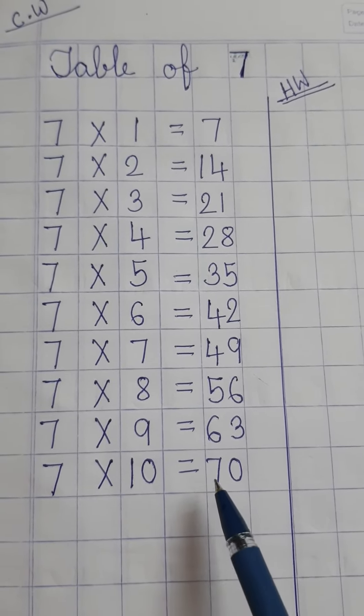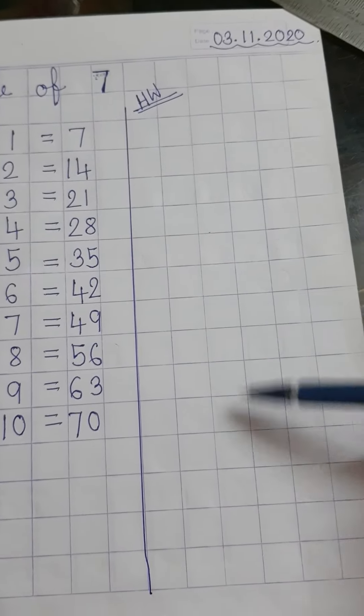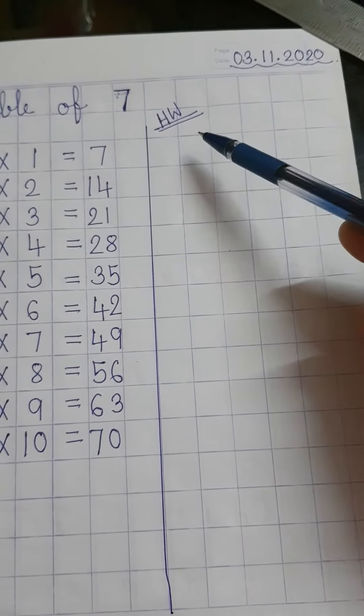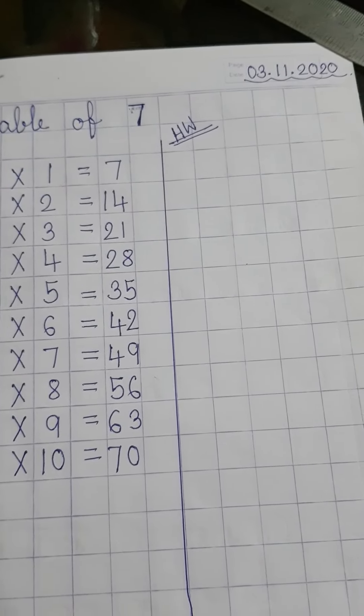7 × 10 = 70. Read like me, and in this portion you have to do the homework, which means write the table of 7 here also. Hare Krishna.